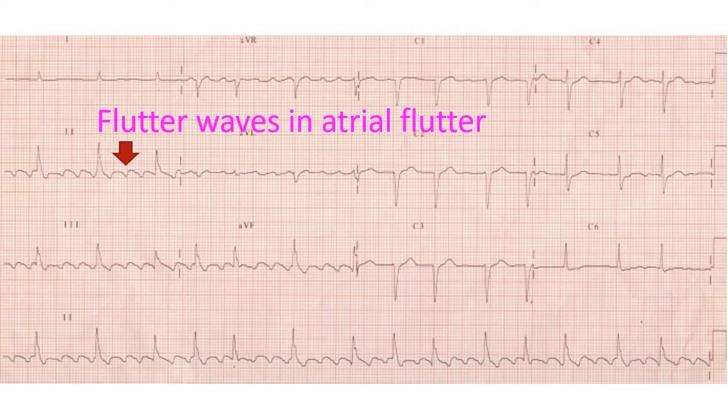Flutter waves are easily seen when the conduction block is more than 2 to 1, so that there is enough space between the QRS complexes and T waves to show the flutter waves. The QRS complex and T waves represent the electrical activity of the ventricles in the ECG. Normal electrical activity of the upper chambers is known as the P wave, which is replaced by flutter waves in atrial flutter.